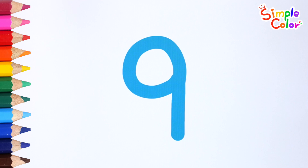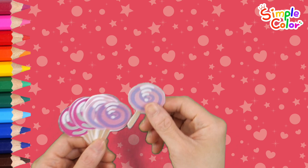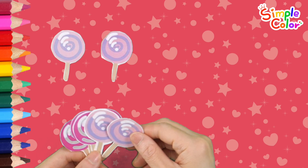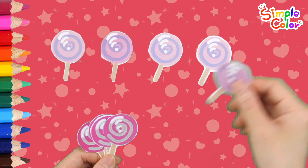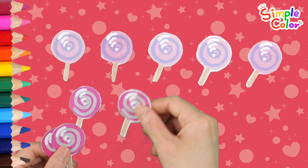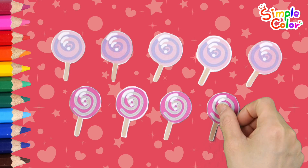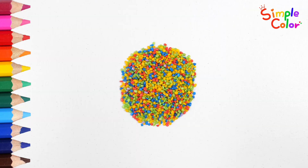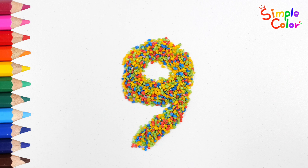9. It's sweet candy. How many candies are there in all? 1, 2, 3, 4, 5, 6, 7, 8, 9. There are 9 candies in all. 9. Shall we make a number? 9.